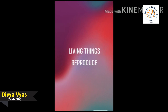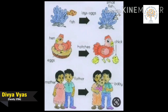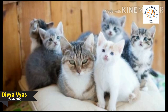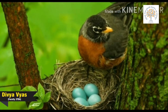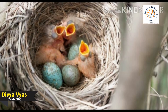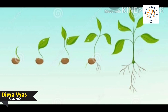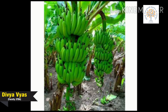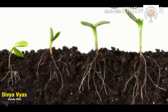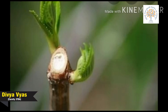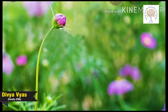Our next point is: living things reproduce. Living things produce new living things similar to themselves. For example, cats give birth to babies called kittens. Birds lay eggs from which baby birds come out. Trees produce seeds from which new trees grow. New plants can also grow from roots, stems, bulbs, or other parts of a plant.